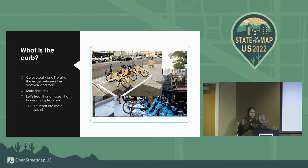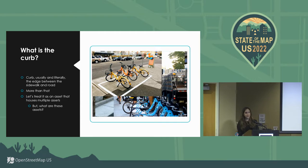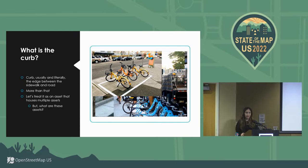Ideally you would want to focus on both sides of the curb. The good thing is that these are all things that we can map in OSM and we know how to map in OSM. They're fairly easy — they're points of interest for the most part, unless you have a parking area and then you just do a polygon. But this is all data that cities can definitely benefit from.